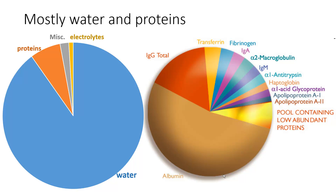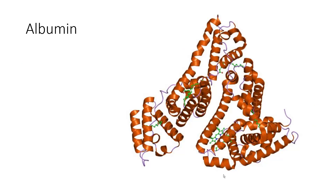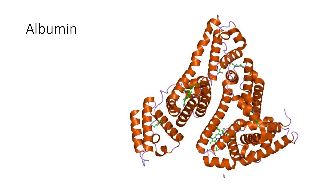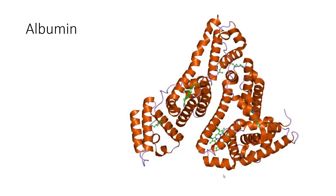We're going to talk about proteins as three groups. The first one being albumin. Looking back at that graph, the largest component of the plasma proteins — shown in the light brown that makes up over half of that bar graph — is albumin.